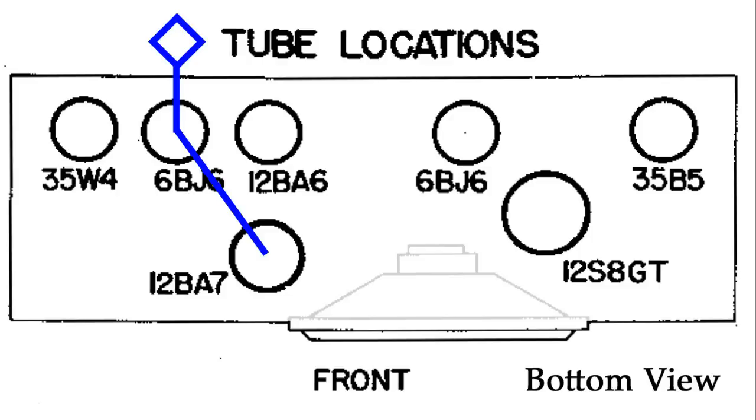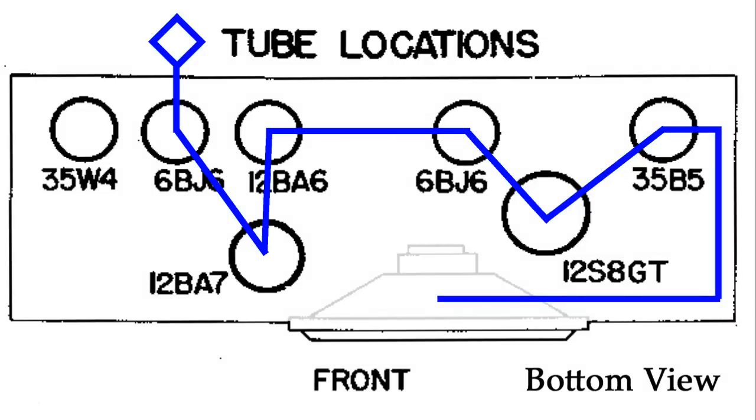From that point, it's going to turn into a 10.7 MHz signal. That gets sent up to the 12BA6 for amplification, then over to the next 6BJ6, then to the 12S8GT, and this is where it gets detected and amplified, then shipped over to the audio output tube, which is the 35B5, and of course, then to the speaker.